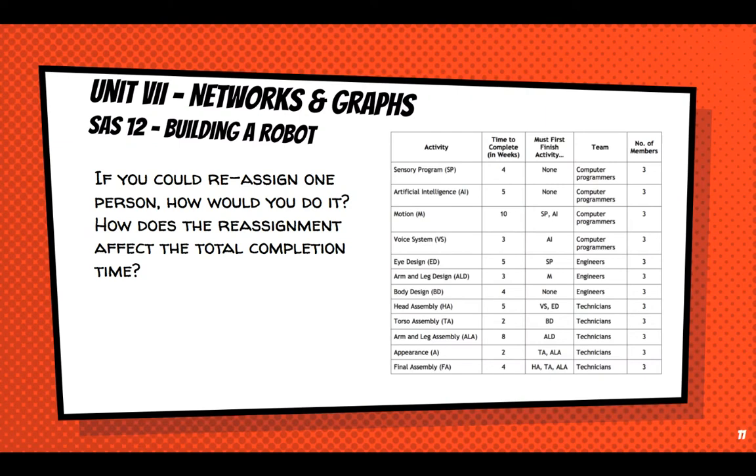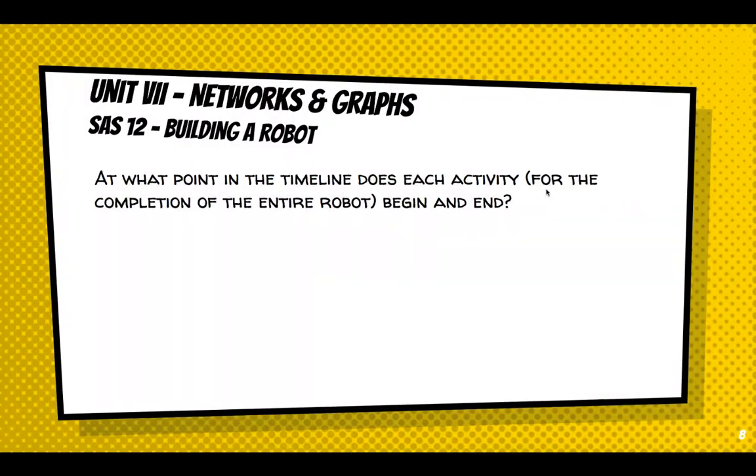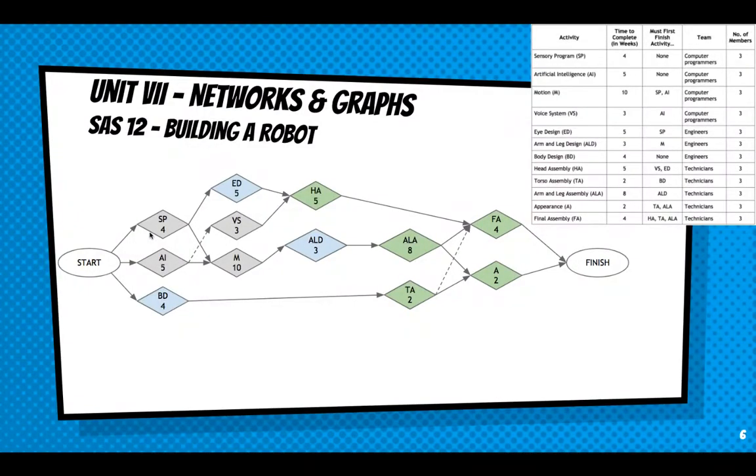So if you could reassign one person, how would you do it? And how does the reassignment affect the total completion time? Well, one of the things they didn't give us here in parameter size is how many in each team? If we start with three, we're going to be waiting a long time. Because if you go back to the actual activity graph, right off, right off the bat, we need three activity or three computer programmers in sensory program, and three in AI. So we would need at least six to get started. And then on engineering, we would need three more. Okay. Which is cool. If you think about this, you would only need three engineers, depending on how well you could distribute the different people. But you would need at least six computer programmers to start.